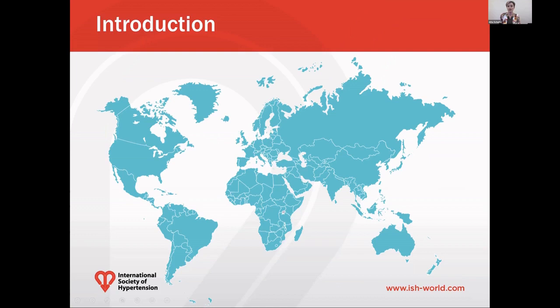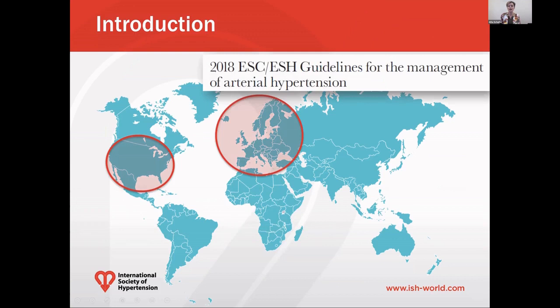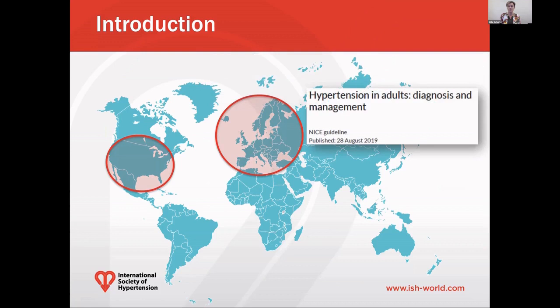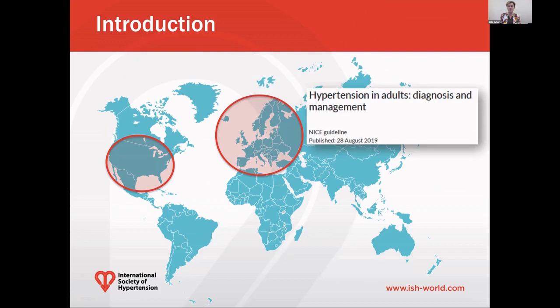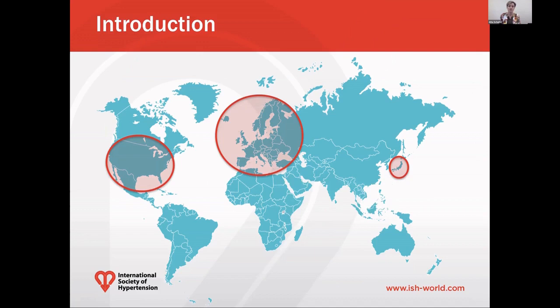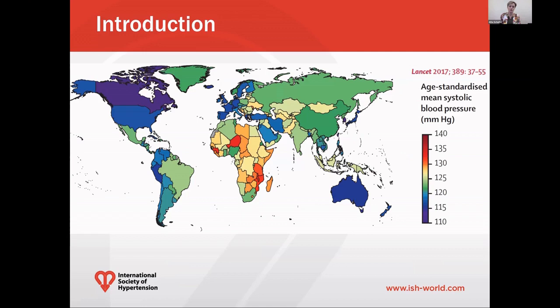Recently, we have seen the release of several prominent sets of guidelines for the management of hypertension around the world. It started in 2017 when the American guidelines were released, followed by the European guidelines in 2018, and those from the United Kingdom released in 2019. Also, the Japanese guidelines were released in 2019. One could easily ask why yet another set of hypertension guidelines are required at this stage.